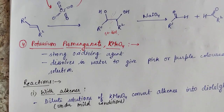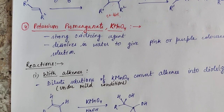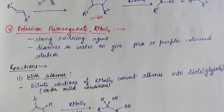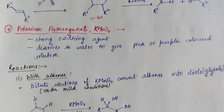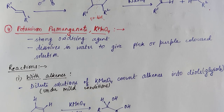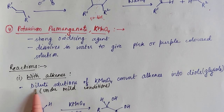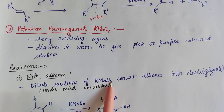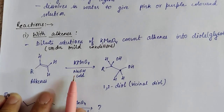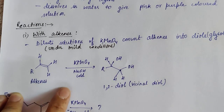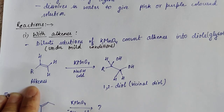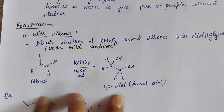Moving on to the last oxidizing agent, potassium permanganate or KMnO4. This is a very common compound found in every chemistry lab. It's a strong oxidizing agent and when mixed in water gives a deep pink or purple colored solution. When combined with alkenes it can form vicinal diols. When used in dilute condition — a cold, dilute alkaline solution of KMnO4 added to alkenes — under mild conditions a 1,2-diol is obtained.